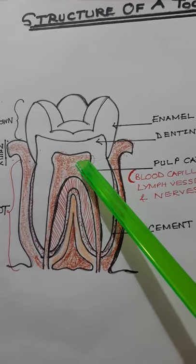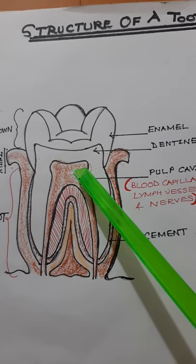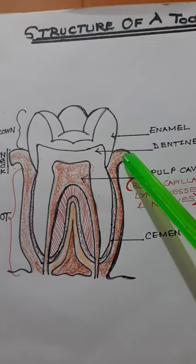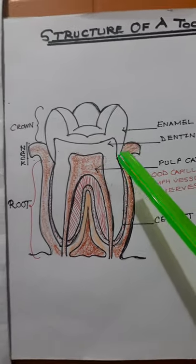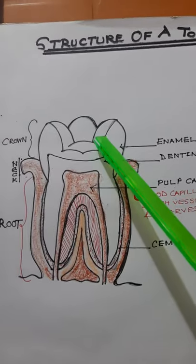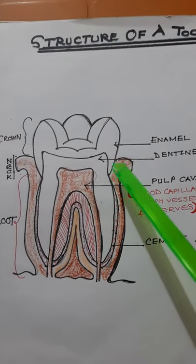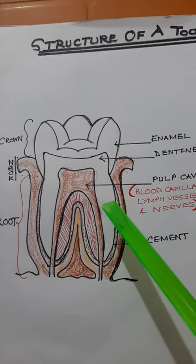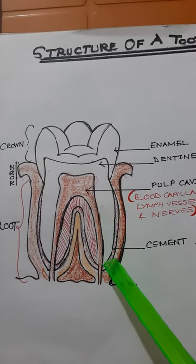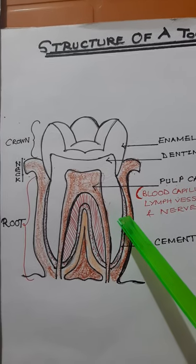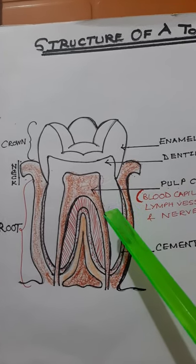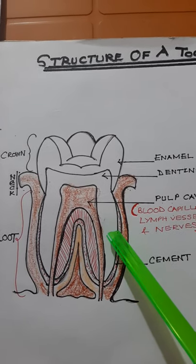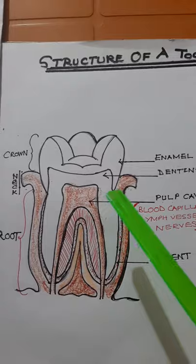Inside the dentine is the pulp cavity. The pulp cavity is rich in blood vessels, lymph vessels, and nerves. The tooth remains embedded in the jawbone by the help of a material known as the cement, which keeps it in place.